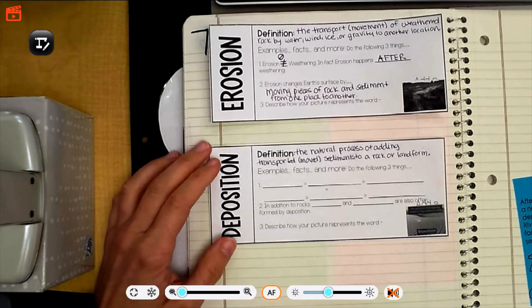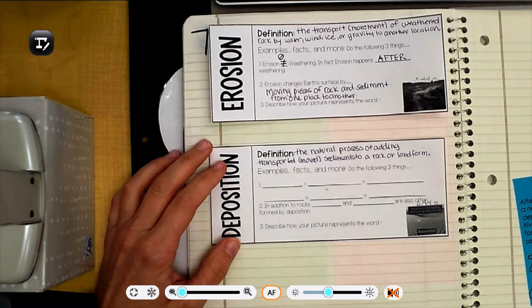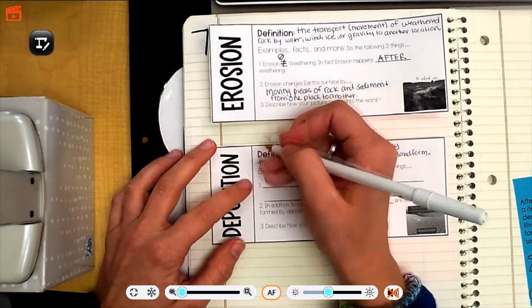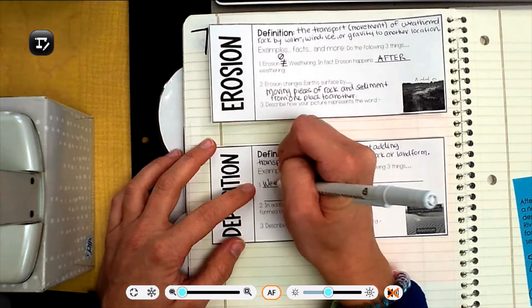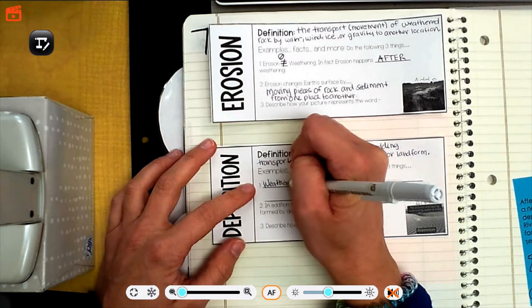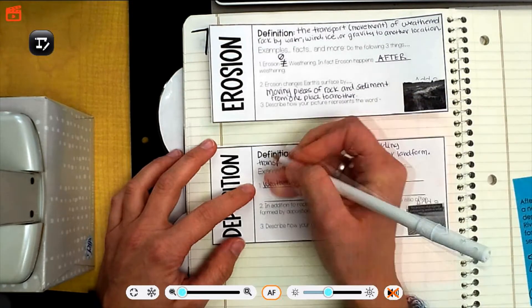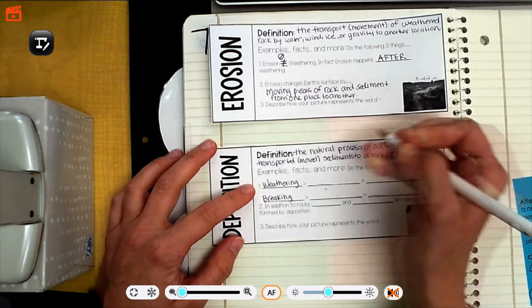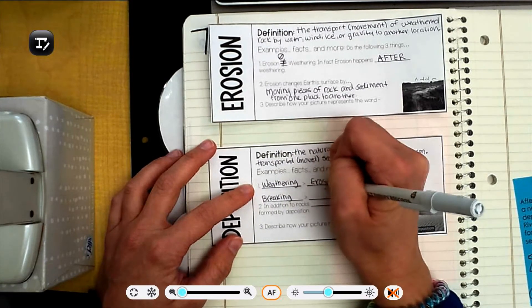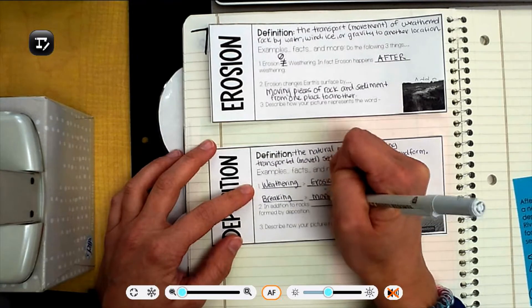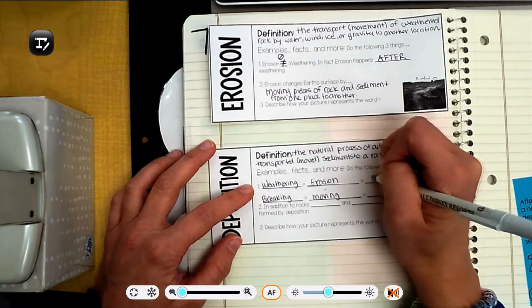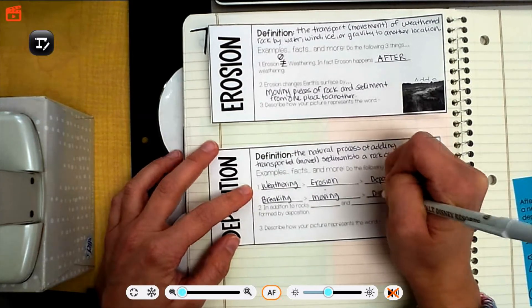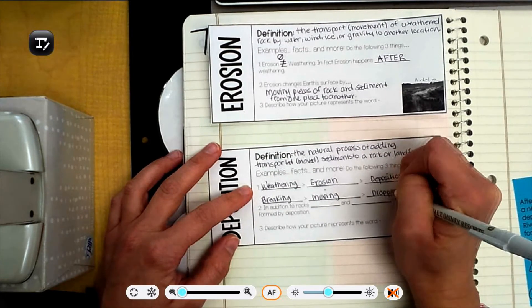So this is the order that things happen in. So if we remember, it's weathering, which is the same as breaking. Then erosion, which is moving. And then we've got deposition, which is like the sediments are getting dropped, dropping, dropping in place.